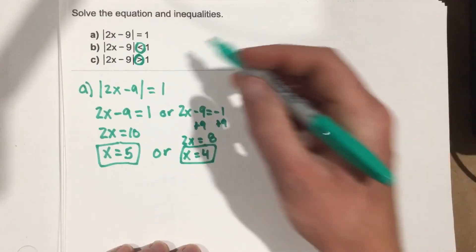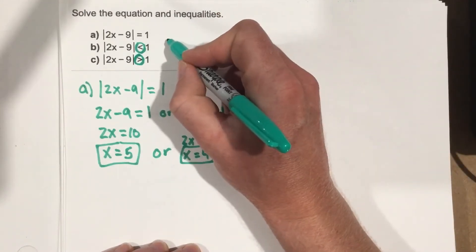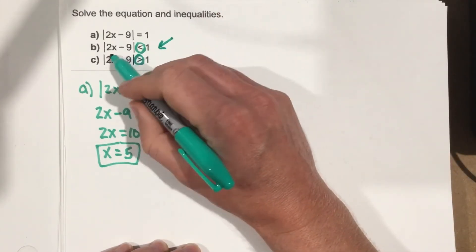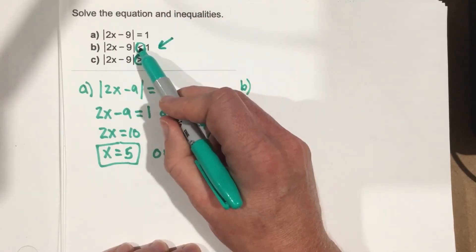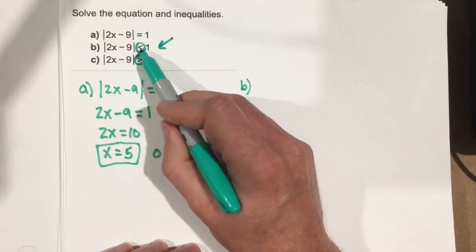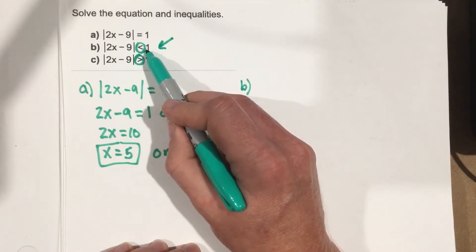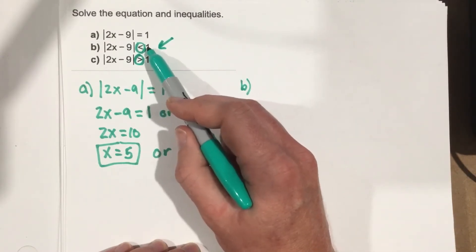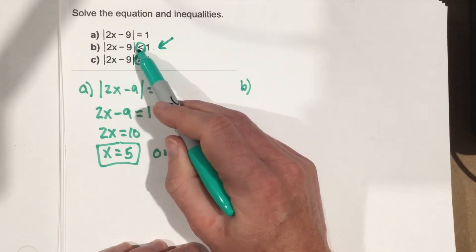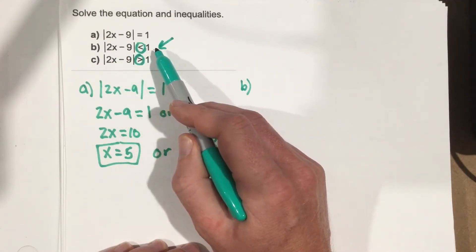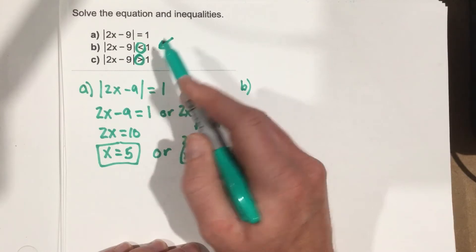So part B, it says that 2x minus 9 is less than 1. So what this means is 2x minus 9 is going to be less than 1, that's the positive version. Or, we're going to have to change this one to a negative one. But when we change it to a negative one, we need to flip that sign. So it means 2x minus 9 has to be less than 1 or it has to be greater than negative 1.